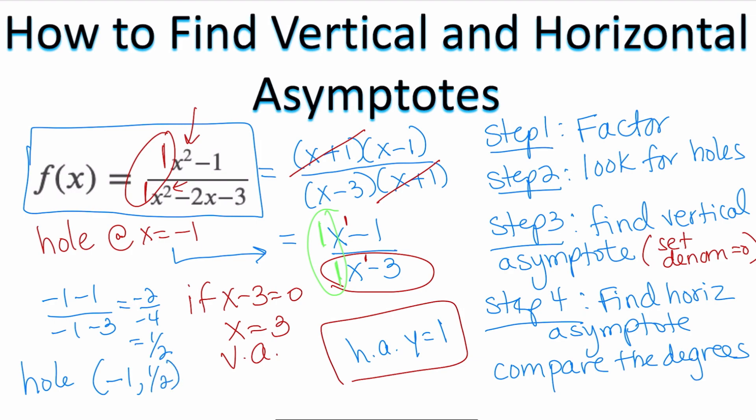So in this particular case, I've been able to identify a vertical asymptote, a horizontal asymptote, and the hole that the graph has.